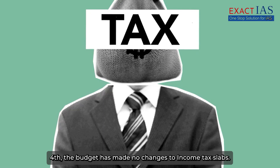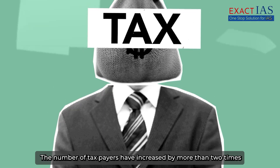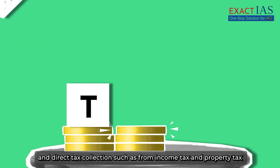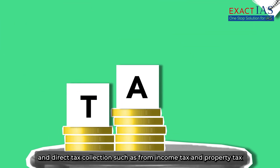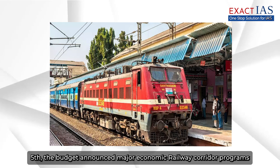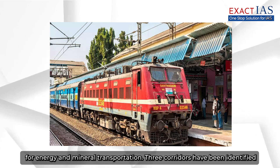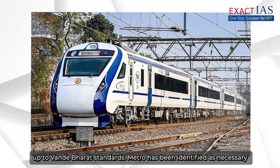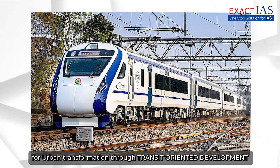Fourth, the budget has made no changes to income tax slabs. The number of taxpayers has increased by more than two times and direct tax collection from income tax and property tax has increased by three times since 2014. Fifth, the budget announced major economic railway programme corridors for energy and mineral transportation. Three corridors have been identified mainly for freight passage. 40,000 train bogies are going to be brought up to Vandebharat standards. Metro has been identified as necessary for urban transformation through transit-oriented development.